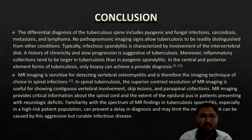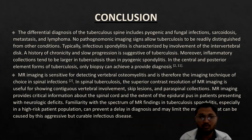MR imaging is sensitive for detecting vertebral osteomyelitis and is therefore the imaging technique of choice in spinal infection. In spinal tuberculosis, the superior contrast resolution of MR imaging is useful for showing contiguous vertebral involvement, skip lesions, and paraspinal collections. MR imaging provides critical information about the spinal cord and extent of epidural pus in patients presenting with neurological deficits. Familiarity with the spectrum of MR findings in tuberculosis, especially in high-risk patient populations, can prevent a delay in diagnosis and may limit the morbidity caused by this aggressive but curable infectious disease.